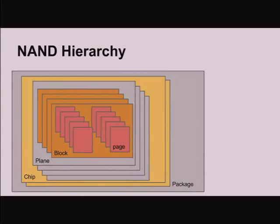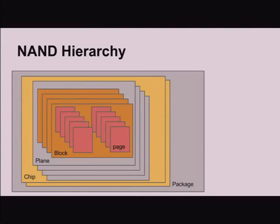That's kind of hard to understand, so I drew a picture. You've got a number of blocks, each block has a number of pages. You have a number of planes contained within a chip, and then a number of chips within a package. This hierarchy is important because it determines how much parallelism you can get. Usually you get more parallelism up until the plane layer, where things start to bottleneck. You can only do one operation per plane, but with multiple planes you can do many operations in parallel. Multiple chips interact independently, so you can do things in parallel there as well.